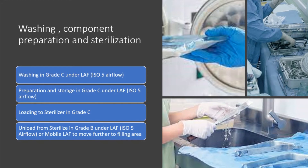All those items then need to be moved for sterilization. The sterilizers are installed in the Grade C area. The loading side and unloading will be performed in the Grade B area under LAF. It may happen that you will unload the material under a mobile LAF and it will move directly to the filling area.